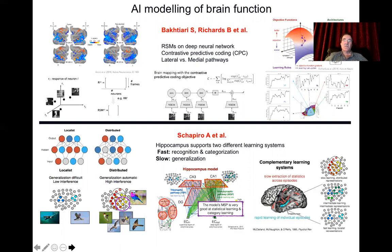I should mention the beautiful work of Anna Shapiro's group looking at the hippocampal formation, showing that at least two different learning systems can be identified using a machine learning approach — localist responses where one can categorize specific individual examples, complemented by a slower generalization function allowing identification of new cases not seen before but concordant with previous categorization. Therefore, you can start to generalize out from existing prior knowledge.